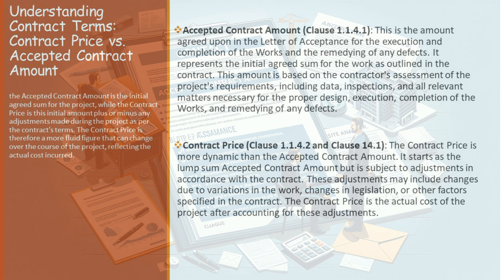Now, let's shift our focus to the contract price, as outlined in clauses 1.1.4.2 and 14.1. The contract price starts its life as the accepted contract amount, but it doesn't stay static. It's a dynamic figure, subject to adjustments as the project progresses. These adjustments can be due to various factors, such as changes in work scope, legislative changes, or other specific conditions outlined in the contract.